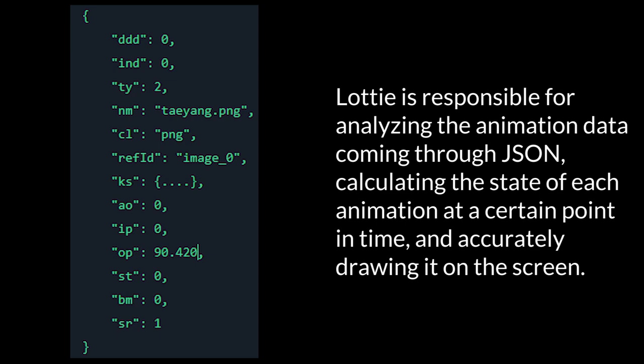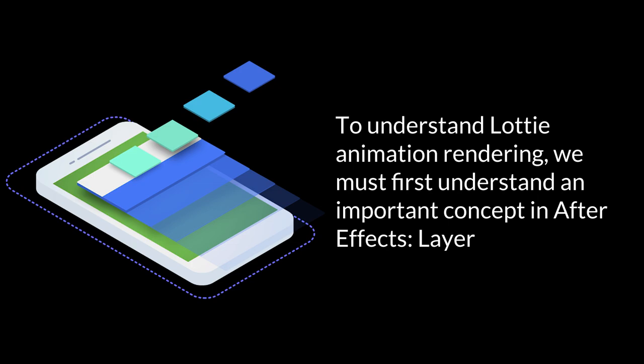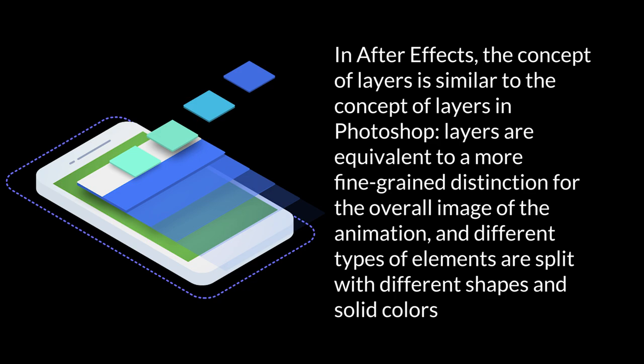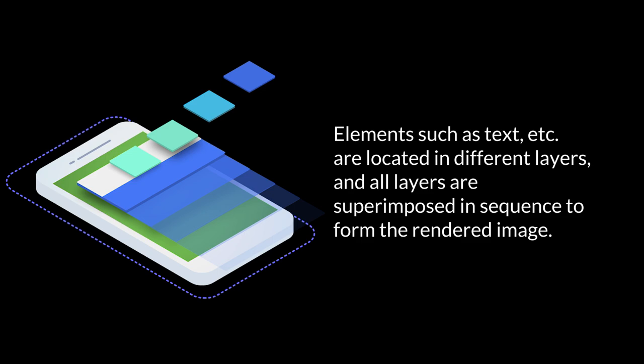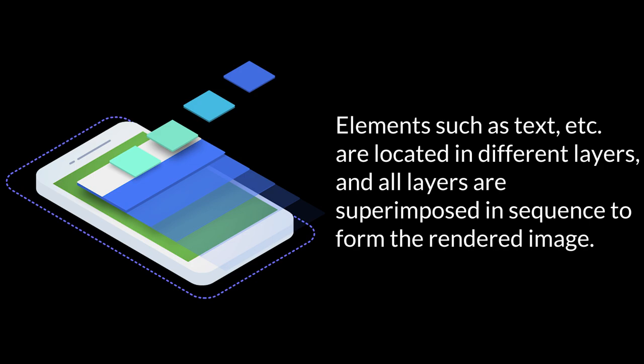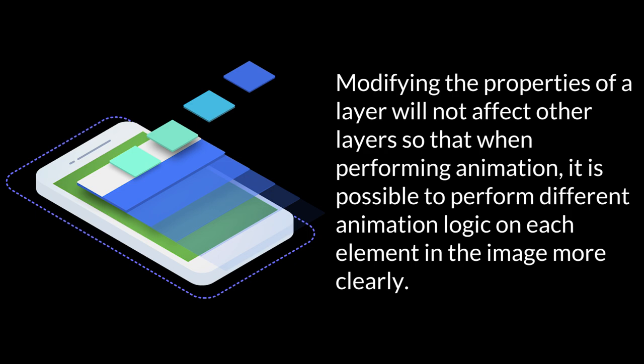Lottie is responsible for analyzing the animation data coming through JSON, calculating the state of each animation at a certain point in time, and accurately drawing it on the screen. To understand Lottie animation rendering, we must first understand an important concept in After Effects: a layer. In After Effects, the concept of layers is very similar to layers in Photoshop. Layers are a more fine-grained distinction of the overall image, with different types of elements split into different shapes, solid colors, and text, located in different layers. All layers are superimposed and sequenced to form the rendered image. Modifying the properties of one layer does not affect other layers, allowing different animation logic to be applied to each element more clearly.